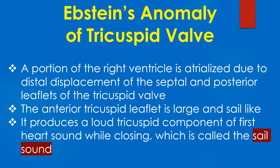A portion of the right ventricle is atrialized due to distal displacement of the septal and posterior leaflets of the tricuspid valve. The anterior tricuspid leaflet is large and sail-like. It produces a loud tricuspid component of the first heart sound while closing, which is called the sail sound.